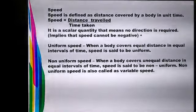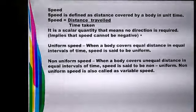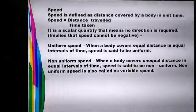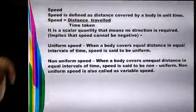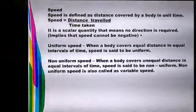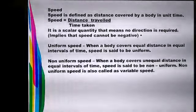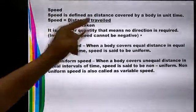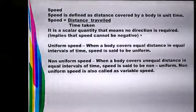Speed can be measured in kilometers per hour, miles per hour, meters per second, or centimeters per second. In the MKS or SI system, the unit of speed is meters per second, since distance is in meters and time is in seconds. In the CGS system, distance is in centimeters and time is in seconds, so the unit of speed is centimeters per second.